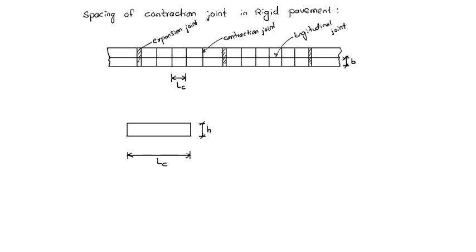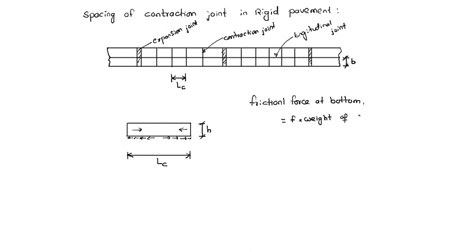Now, due to the weight of the slab, a normal reaction will be there at the bottom. If the slab tries to contract, a frictional force will be produced at the bottom, opposite to that contraction. The frictional force at the bottom equals the coefficient of friction F multiplied by the weight of the slab. Since contraction acts from both sides, each side contributes Lc by 2.